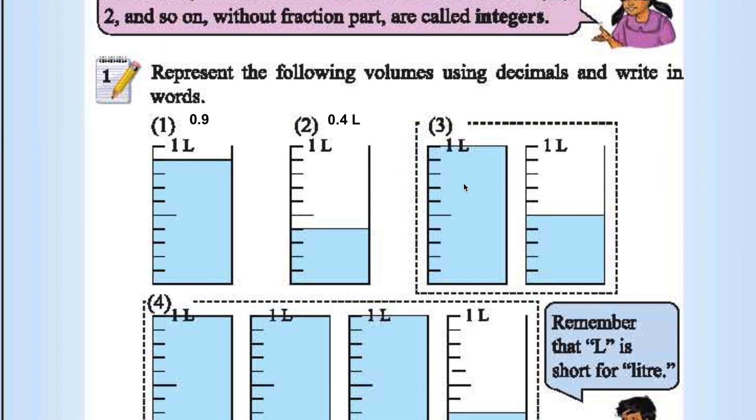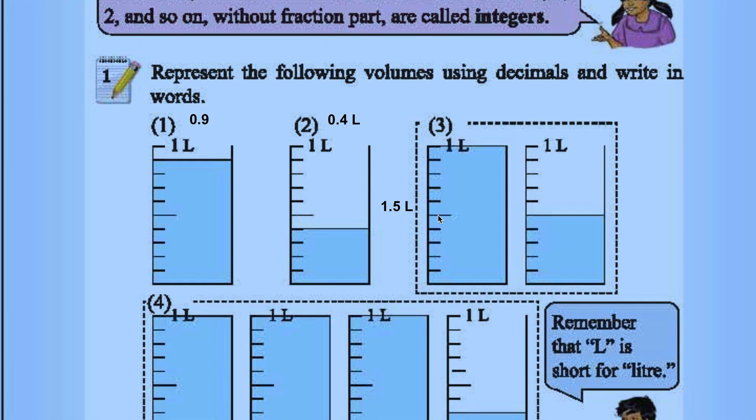Next one. 1 liter plus 1, 2, 3, 4, 5. 0.5. So together 1 plus 0.5 is 1.5 liter.